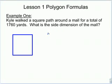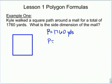They told us that the total path around the square was 1,760 yards, so that is my perimeter. I know that my perimeter is 1,760 yards. To find the perimeter of a square, I use the formula P equals 4 times S, where S stands for the side. The square has four sides that are all the same, so 4S gives me the perimeter. They already gave us the perimeter.